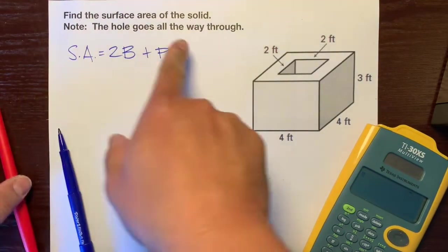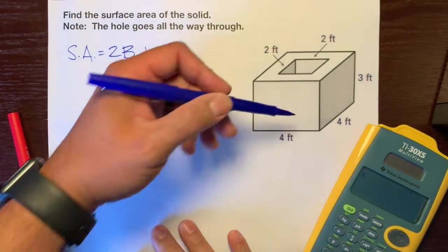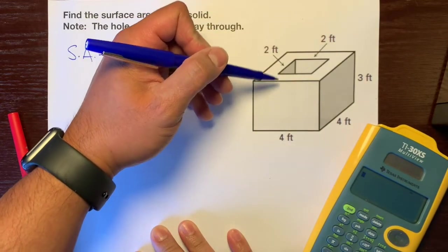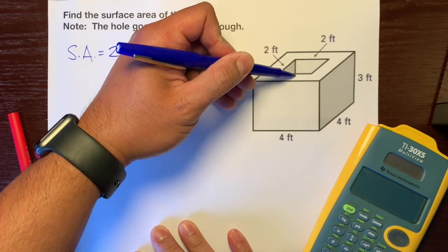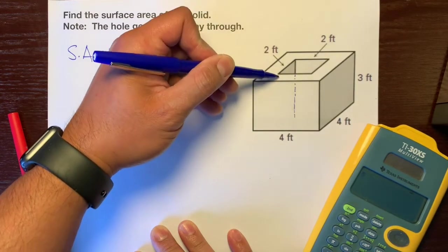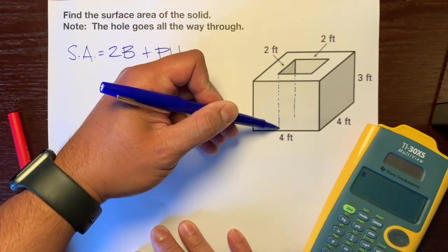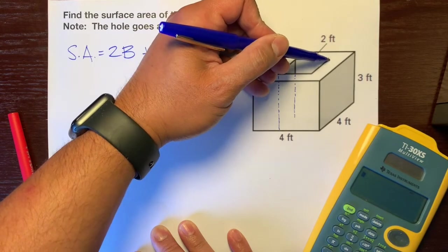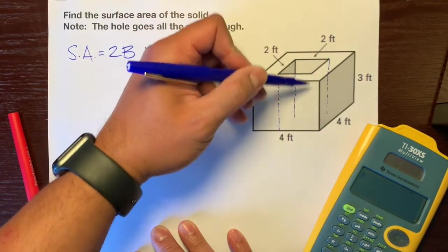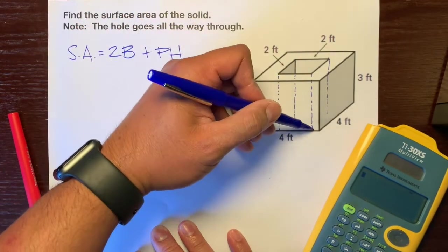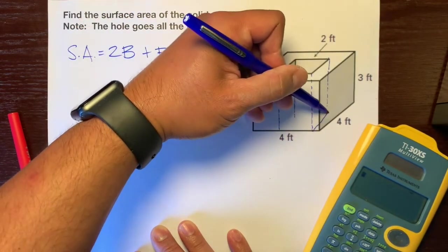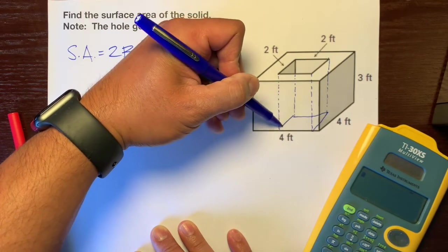The note says the hole goes all the way through. So let's draw this hole as if we have x-ray vision. We have this line that goes all the way down, and we'll just connect it here.